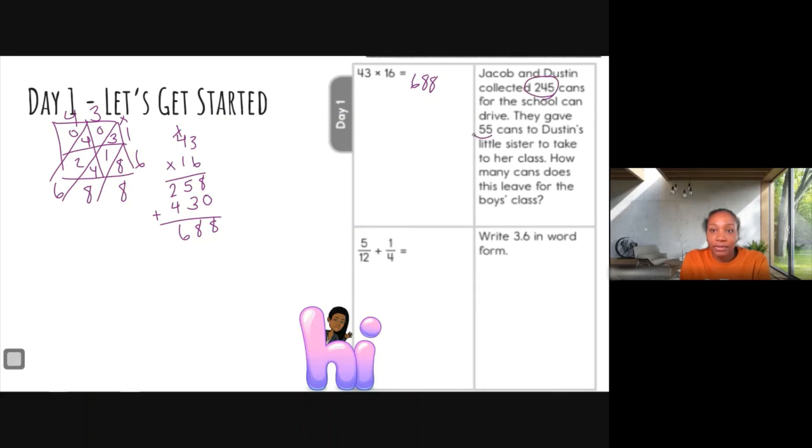All right, I like to always go in, circle my numbers, and then I like to underline any keywords that's going to help me figure out how to set my problem up. So they started with 245 cans, and then they gave the cans away. So that means I'm subtracting.